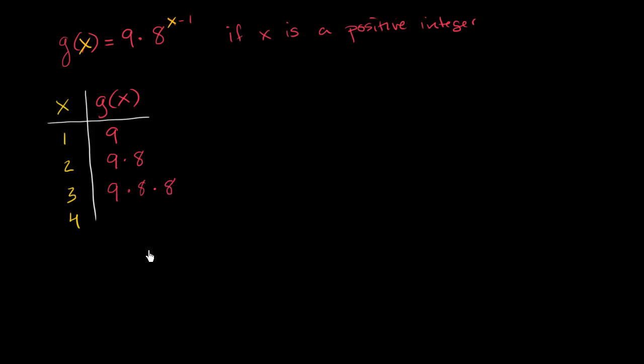I think you see a little bit of a pattern forming. When x is 4, this is going to be 8 to the 4 minus 1 power, 8 to the third power. So that's 9 times 8 times 8 times 8.